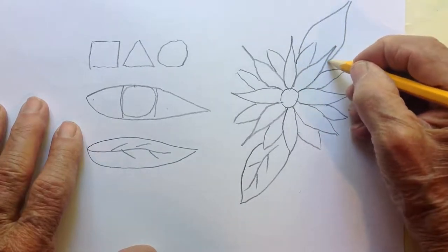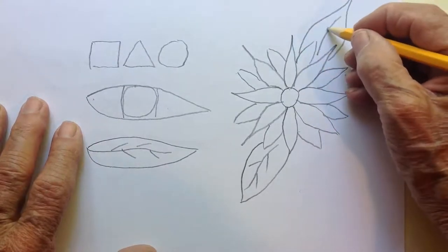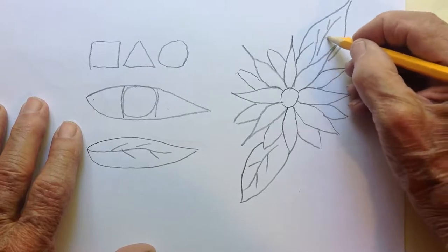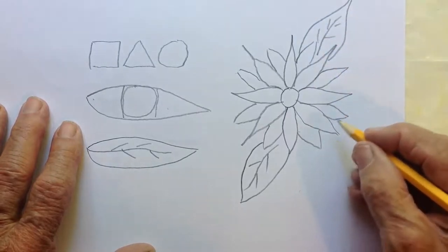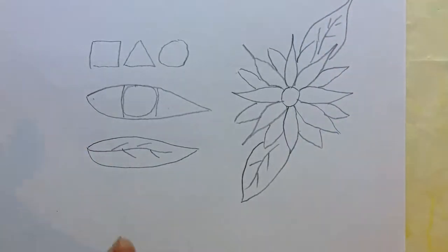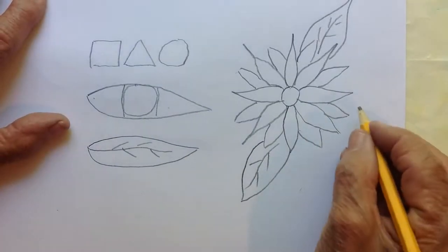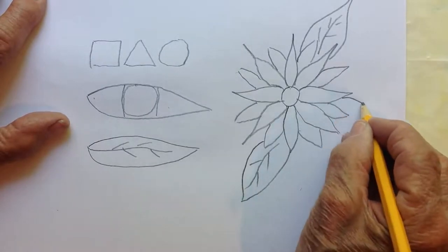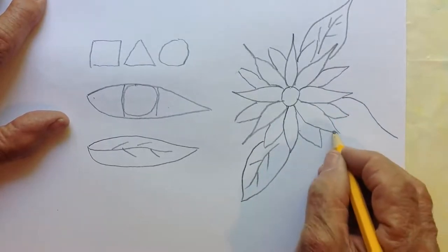So I'll add a leaf here, put the vein in, and then I always do things in odd numbers like one, three, five, seven - makes it more interesting. And then we'll do a third leaf here.